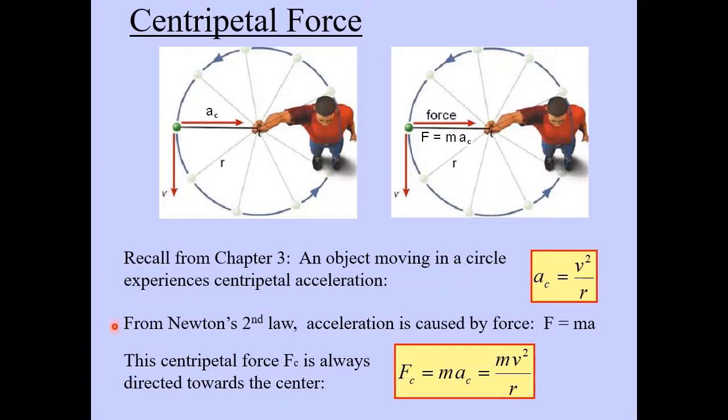Now from Newton's second law, we know that acceleration is caused by force. This comes from f equals ma. So the centripetal force is directed towards the center, and this centripetal force is what causes, in this case, the ball to go around in a circle, and that force is created by the tension of the string there.